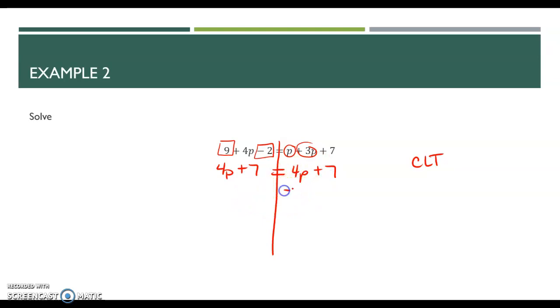And if I subtract 4p from both sides to get the p's to one side, well, my p's go away because 4 minus 4 is 0, 4 minus 4 is 0. We're left with 7 equals 7. Or if you subtracted, we'd get 0 equals 0. Either way, it makes sense. 7 does equal 7. I still don't have a p though. But 7 does equal 7. And so since this makes sense, we have infinitely many solutions.